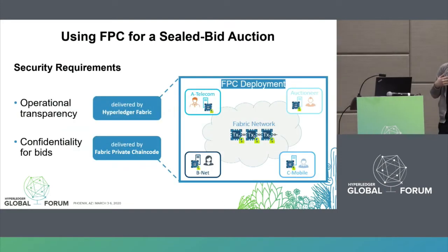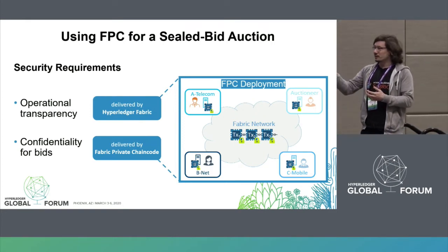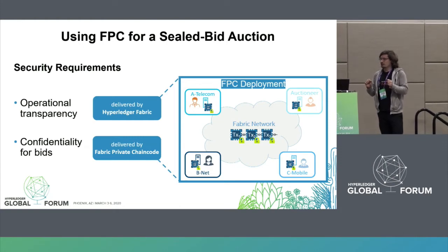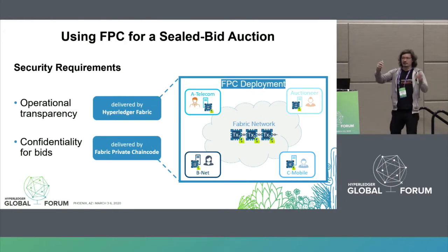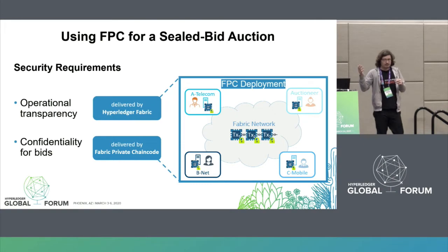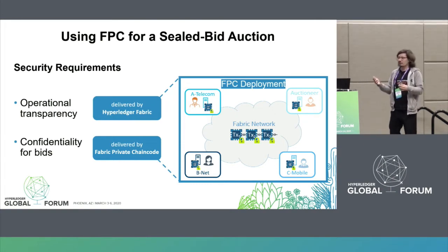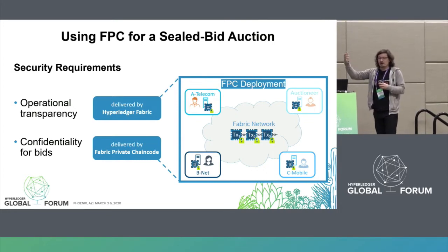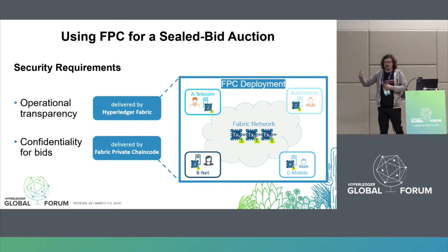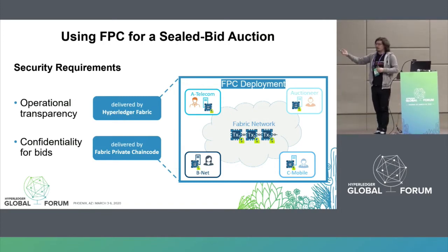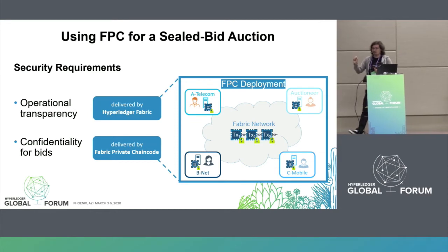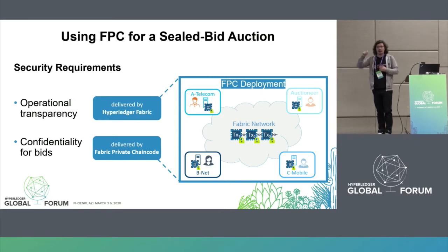One use case where Fabric Private Chaincode makes sense is a sealed bid auction. This kind of auction is often used when 5G mobile licenses are sold to telecom providers — we're talking really billions of dollars. We like the transparency aspect of a blockchain so everyone can see that their bid was considered in the evaluation, but the confidentiality aspect — that bids should remain secret until evaluation — we get from Fabric Private Chaincode.